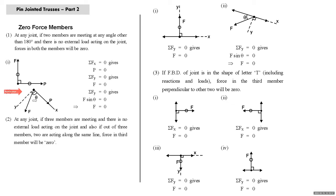Now we take the case when two members are meeting at any angle less than or more than 90 degrees. Take x reference along the line of action of force P, and y normal to it. Write sigma Fy = 0: F sine theta = 0, so F is zero. Write sigma Fx = 0: P is also zero. This is Note Number One — at any joint if two members are meeting at any angle other than 180 degrees with no external load, force in both members will be zero.